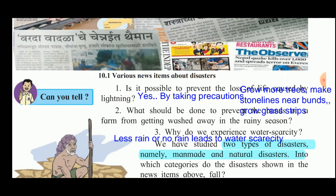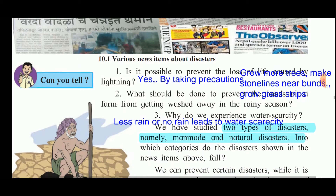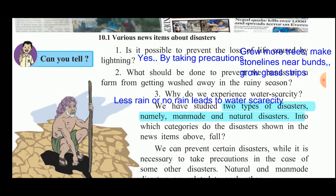What should be done to prevent the farm from getting washed away in the rainy season? During rainy season, due to heavy rainfall, there are chances that the land in the farm gets washed away. To prevent this, you have to grow trees, make stone lines near the bunds, and grow grass strips along the farm. The grass strips and tree roots will hold the soil and prevent it from being washed out.